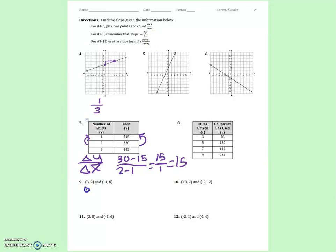So for number 9, I would write 6 minus 2, because we're doing y2 minus y1, over negative 1 minus 3. Okay, 6 minus 2 is 4. Negative 1 minus 3 is negative 4. Make sure we simplify. 4 over negative 4 is the slope of negative 1.